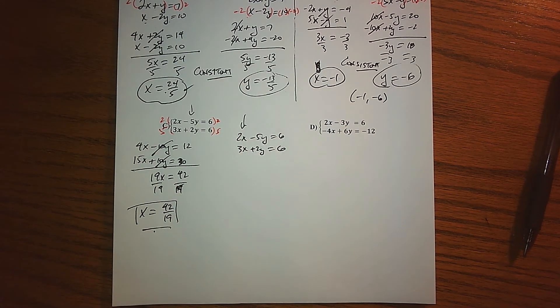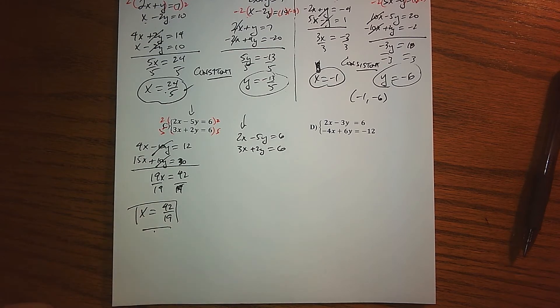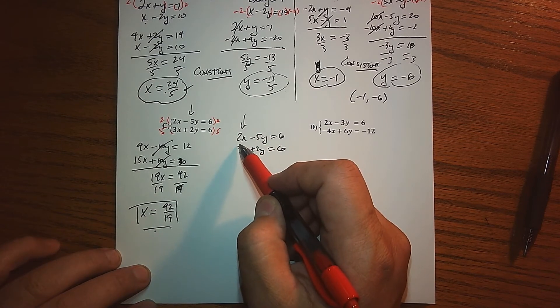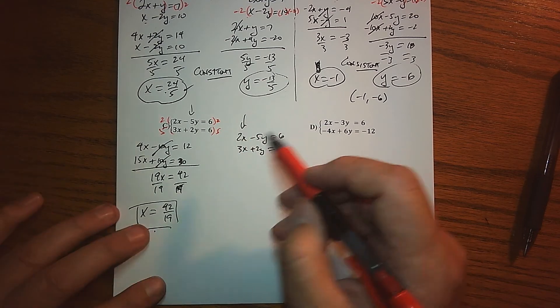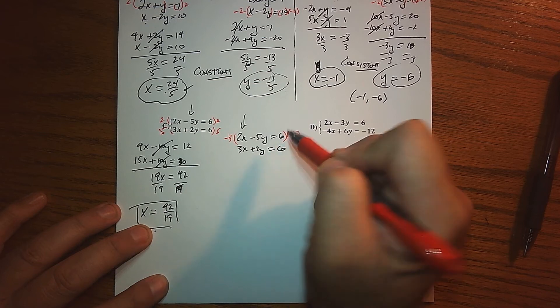What we want to do is start over again, and this time eliminate X—much easier to do that than pushing that nasty fraction around. What do we want to do here? I need these to be opposites. They're both positive, 2 and 3, so just throw a negative in there.